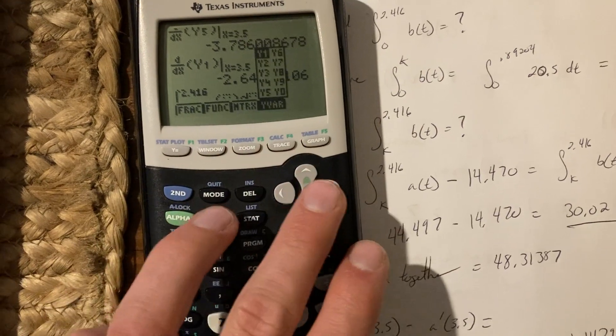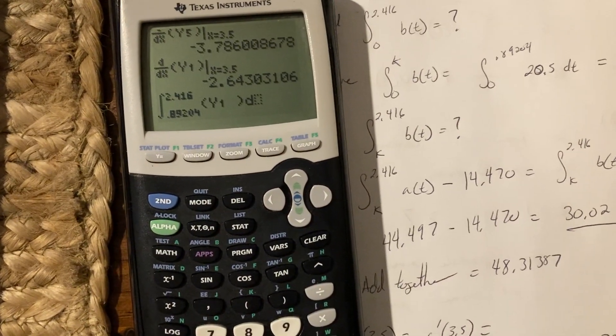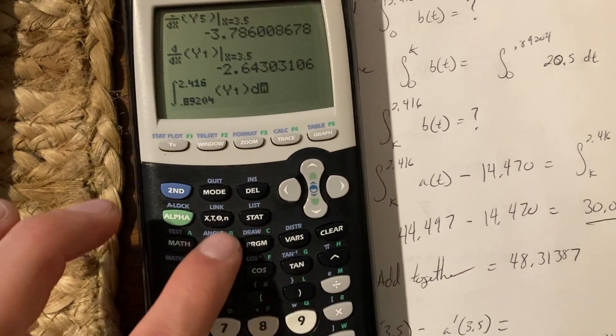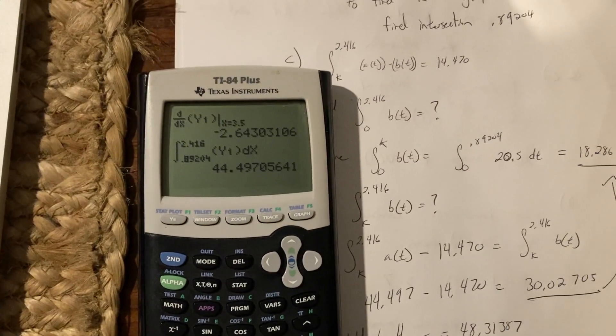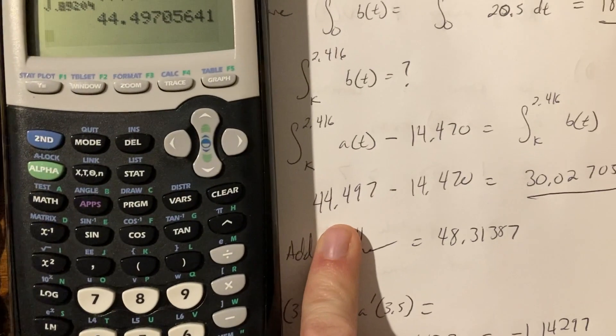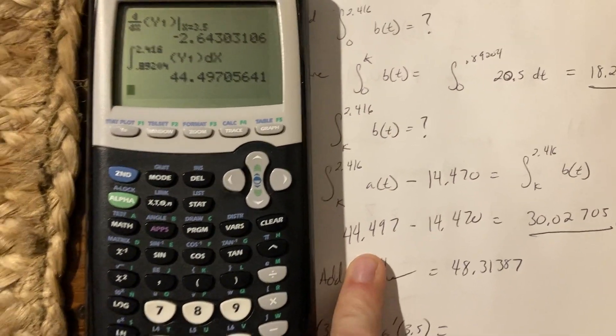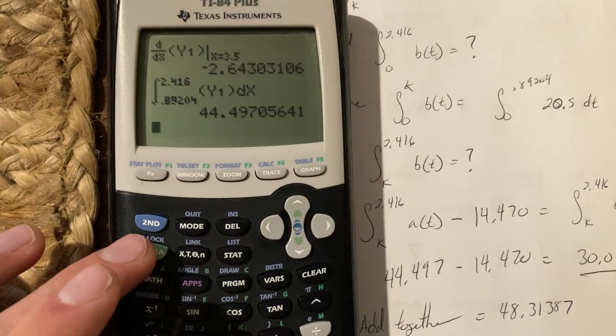So 2nd, F4, there's Y1. Hit enter. This is in respect to X, and I'm going to hit enter. And that gives me that 44.497. See, I don't have to punch it in all the time. One more. I've saved.